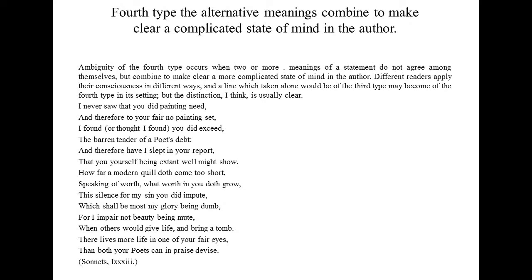The fourth type of ambiguity is when alternative meanings combine to make a clear, complicated state of mind in the author — meanings which may not be given in the text. Ambiguity of the fourth type occurs when two or more meanings of a statement do not agree among themselves but combine to make a clearer, more complicated state of mind than the author intended. Different readers apply their consciousness in different ways, and a line which taken alone would be the third type of ambiguity may become the fourth type in its context. Here is a sonnet of Shakespeare which is about the beauty of his beloved. A writer is not having all the things in his mind at the same time, and similarly readers interpret different things.